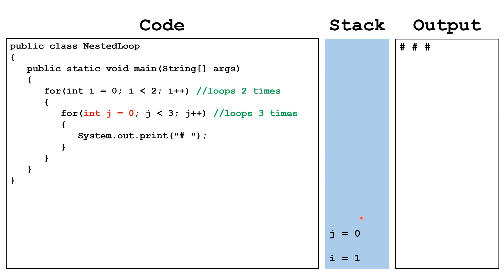Then we check: is i less than two? It is, so we continue again through the body of the outer loop. We restart the inner loop and set j back equal to zero. We check: is j less than three? It is, so we continue to the body of the inner loop and print off a pound and space. We get to the end of the inner loop and increment j by one — j becomes one. At the top of the loop, we again check: is j less than three? It is, so we execute the body and print off another pound and space. We get to the bottom of the inner loop, increment j by one — j becomes two. We check: is j still less than three? It is, so we print off another pound and space. We get to the bottom of the inner loop, increment j by one — j becomes three. We check: is j less than three? That's false — three is not less than three — so we terminate the inner loop.